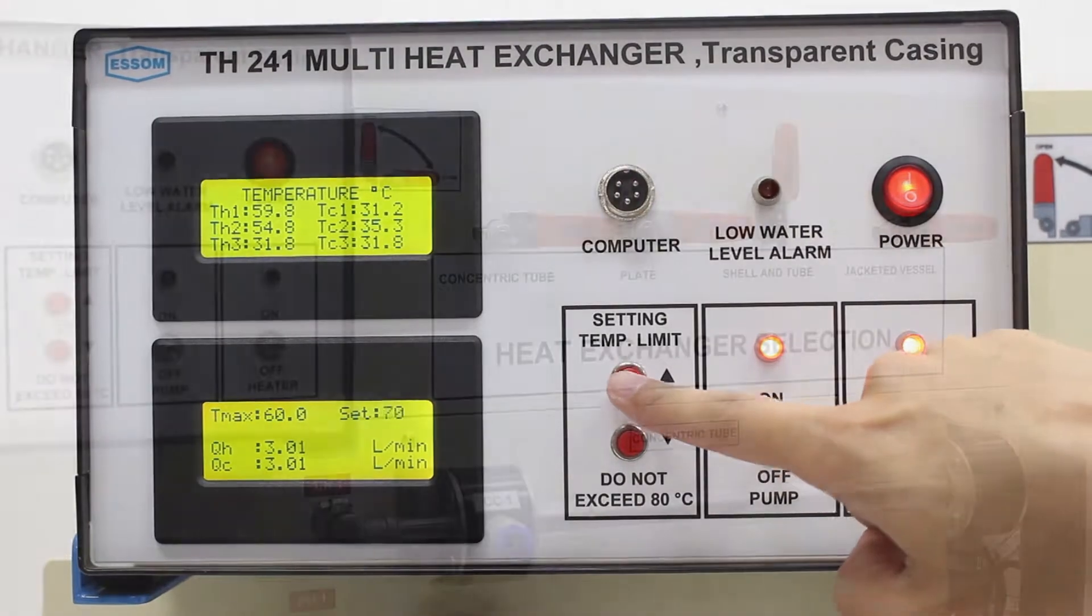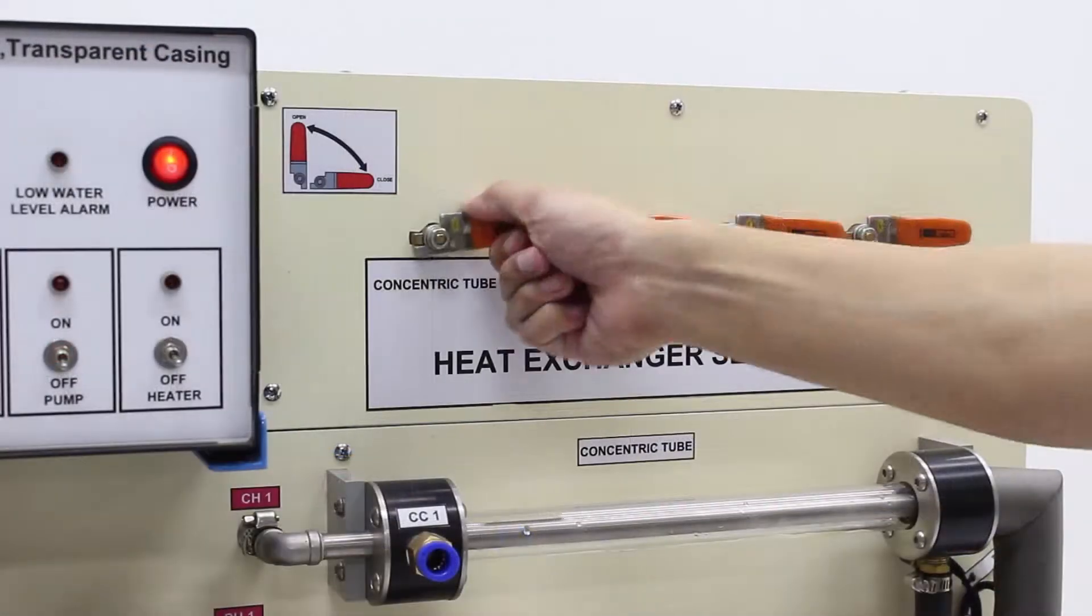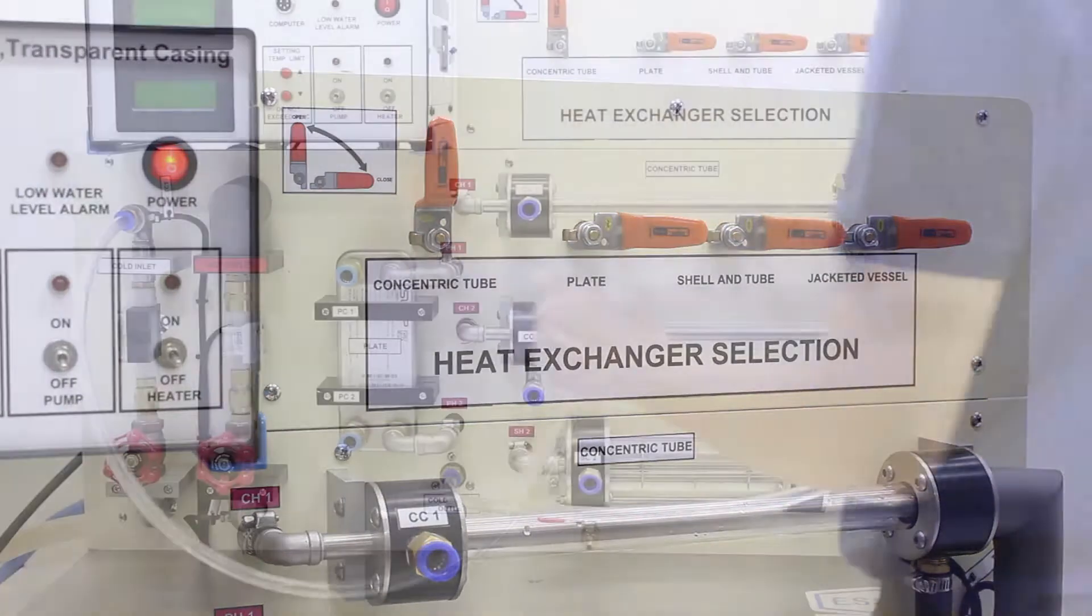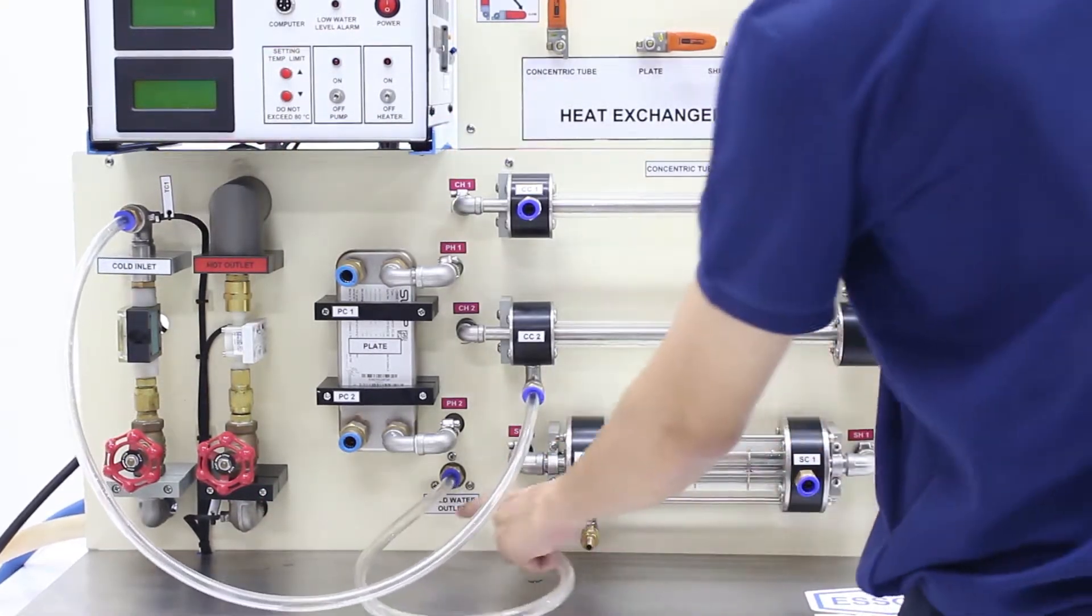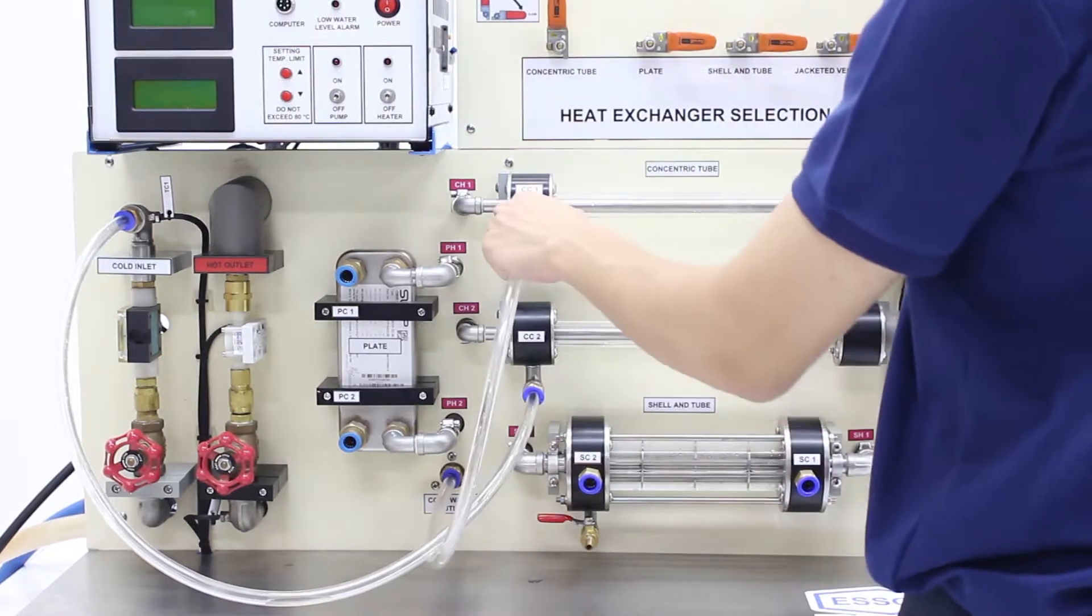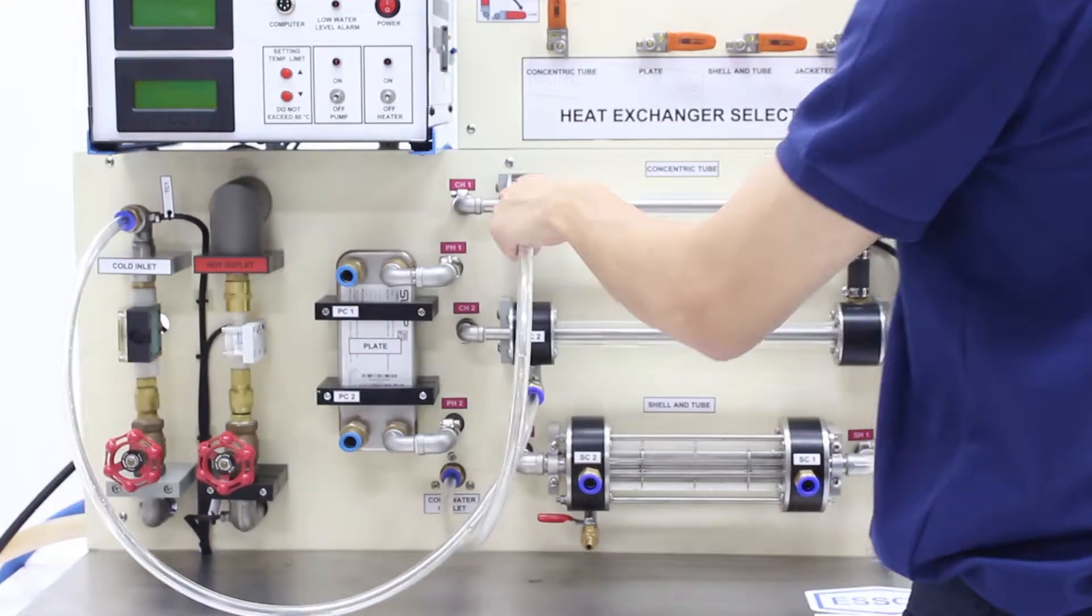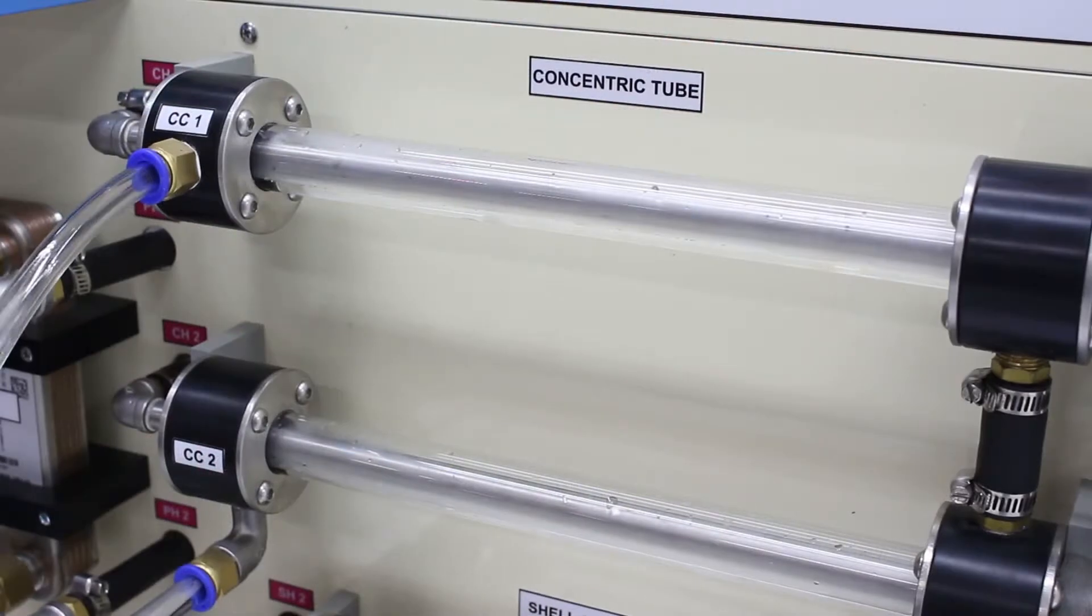Selection of the heat exchanger is simply done by opening a valve, and changing from parallel to counter flow is by switching two flexible hoses. The unit requires outside water supply.